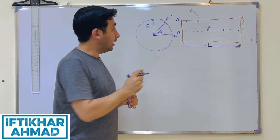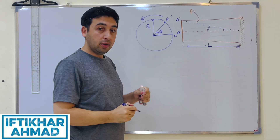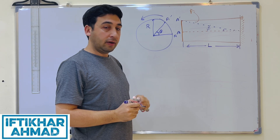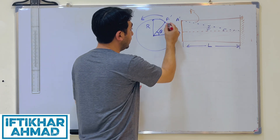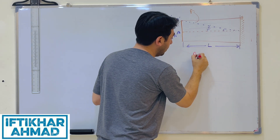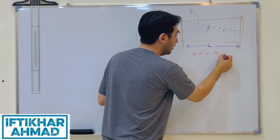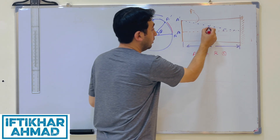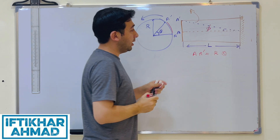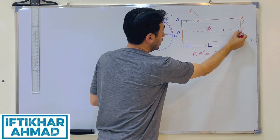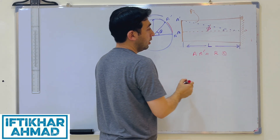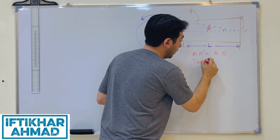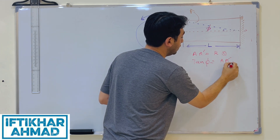We are twisting in this direction. Looking into this circle, we can find theta: the small arc A-to-A-dash is equal to r·theta. We also know from this figure that phi is the shear strain, and tan(phi) equals the perpendicular divided by the base, so tan(phi) equals AA-dash divided by the length of the shaft L.